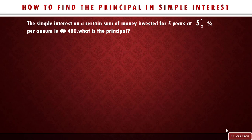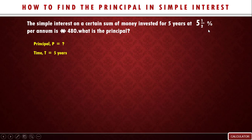Now let's look at example one. The simple interest on a certain sum of money invested for five years at five and one-half percent per annum is four hundred and eighty naira. What is the principal? We are asked to determine the principal, so the principal is unknown. The time is five years. The rate is five and a half — that's 5.5 percent.